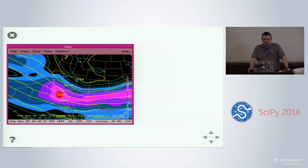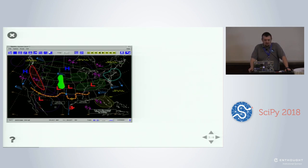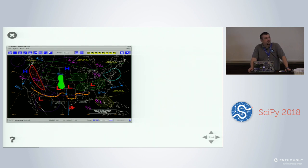Here's an example from a tool that ships with GEMPACK called GARP. This is one of those graphical applications and this is its state-of-the-art graphical output. Another example from GEMPACK is Nmap2. These are the kind of graphics that this tool — which is beloved by meteorologists for its power, ease of use, and the rapidity with which you can create new graphics and explore what's going on in today's weather.